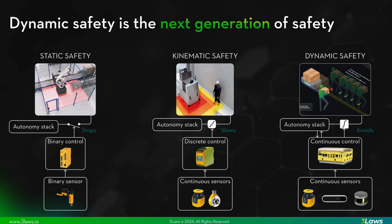Kinematic safety systems solve one of the major issues with static safety systems. Rather than stopping, they slow down the system based on proximity to obstacles and other considerations. While these have lesser performance impacts, they still result in lower throughput and potential stops and gridlocks, particularly in multi-robot scenarios.